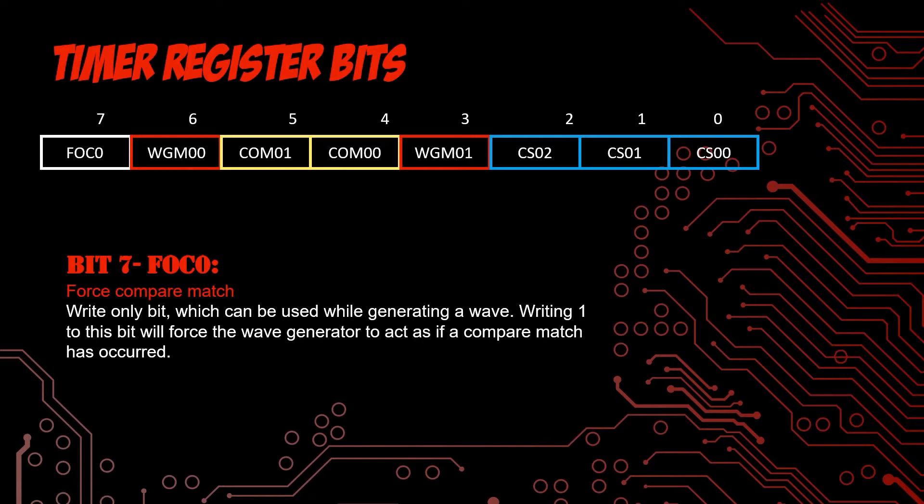In order to program a PWM wave, we need to configure the timer bit. In AVR microcontroller, we have three major timers: timer 0, timer 1, and timer 2. Timer 0 and timer 2 are 8-bit timers while timer 1 is a 16-bit timer. For this video, we are going to use timer 0 which is an 8-bit timer to generate our PWM waves.